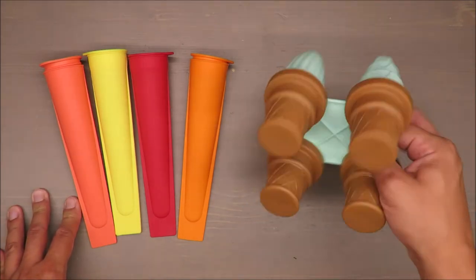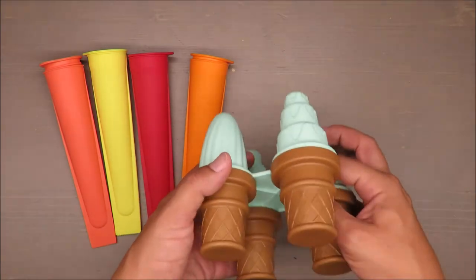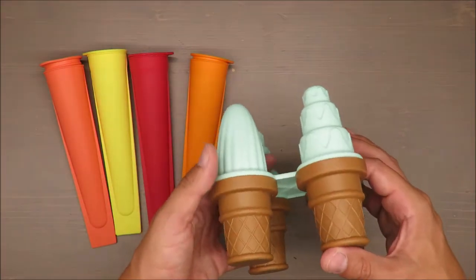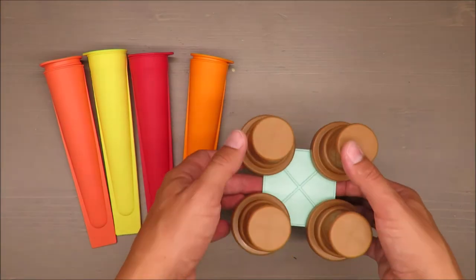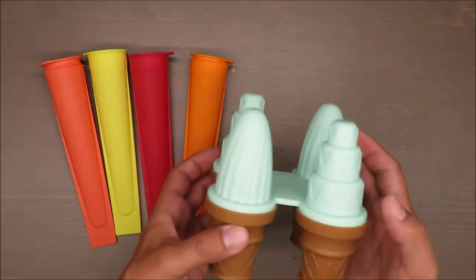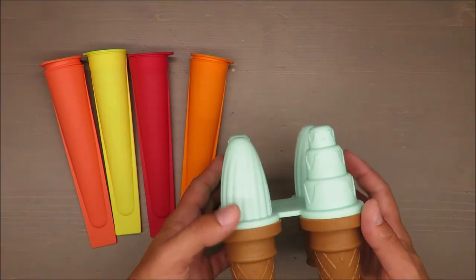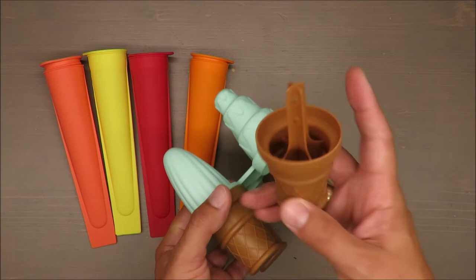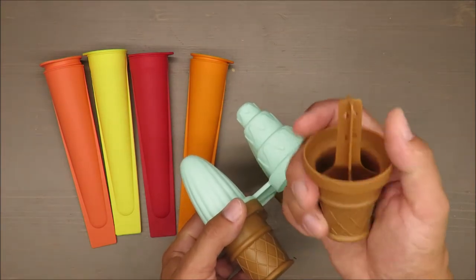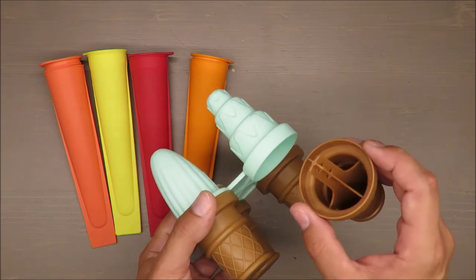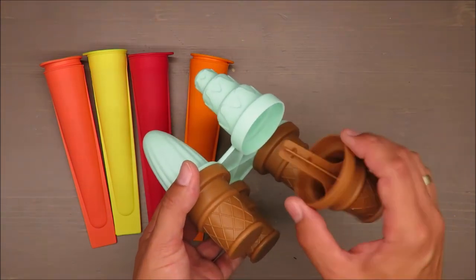Because with those molds, you are first of all not able to seal it properly, or you can but in a different way. You are using only half of the capacity, and you have this plastic bar that is keeping it in place.